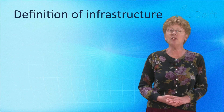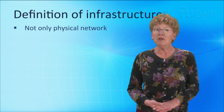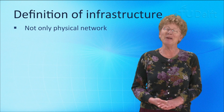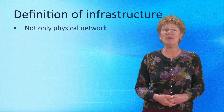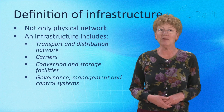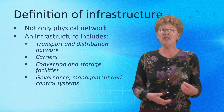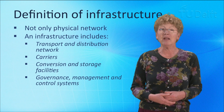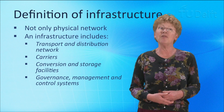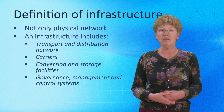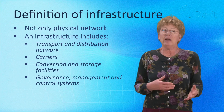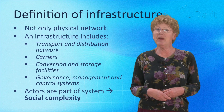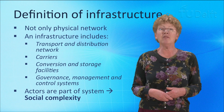By now it should be clear that our definition of infrastructure does not only refer to the physical network. In our view, an infrastructure system includes, besides the transport and distribution networks, the carriers, the conversion and storage facilities, as well as the governance, management and control systems needed to make the system meet its functional specifications and social objectives. In all parts of this system, social agents — or actors as we call them — are making big and small decisions that influence the behaviour of the system.